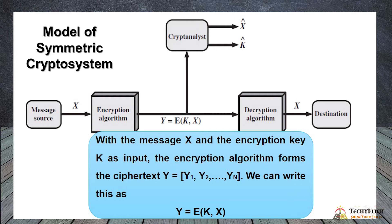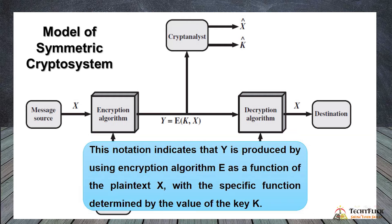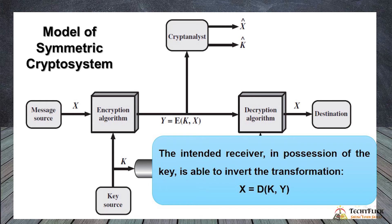We can write this as: y = E(k, x), where y is the ciphertext, E is the encryption algorithm, k is the key, and x is the plaintext. This notation indicates that y is produced by using encryption algorithm E as a function of plaintext x, with a specific function determined by the value of key k. The receiver, in possession of the key, can invert the transformation: x = D(k, y), where D is the decryption algorithm.